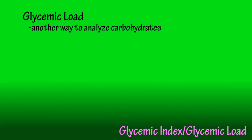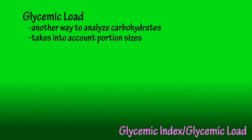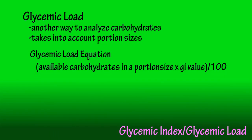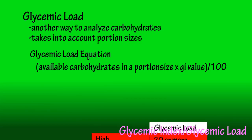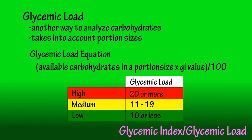Now let's look at glycemic load. Glycemic load is another way to analyze carbohydrate foods — it takes into account portion sizes. While the glycemic index looks only at 50-gram carbohydrate amounts, glycemic load looks at the available carbohydrates in a portion size. The glycemic load equation is: available carbohydrates in a portion size times the glycemic index of the food, divided by 100. The scale is: high equals 20 or more, medium is 11 to 19, and low is 10 and under.